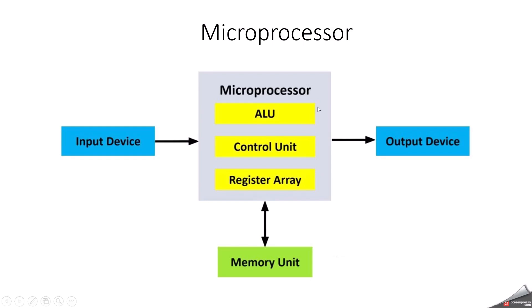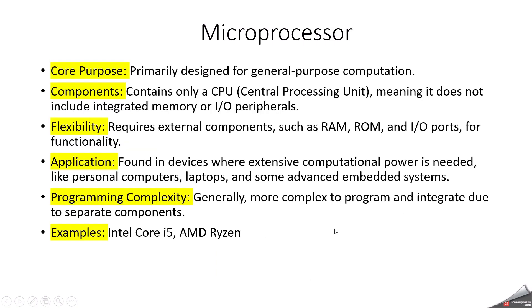A microprocessor has only a CPU — everything else needs to be connected externally. For example, memory units, IO devices, timers, and serial peripheral interfaces all need to be connected externally. Intel Core i5 and AMD Ryzen are very common and well-known processor manufacturers.